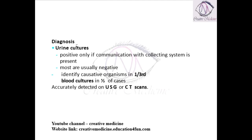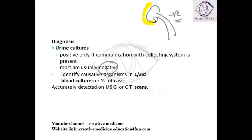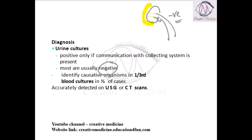For diagnosis, urine cultures are done, but these are positive only if the abscess is communicating with the collecting system. In perinephric abscess, the abscess is present around the kidney. If there is no communication between the ureter and the abscess, the culture will be negative. So in most cases, urine culture is negative — it is only positive if there is a connection between the collecting system and the abscess.